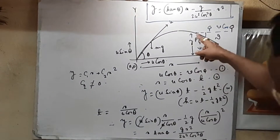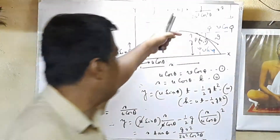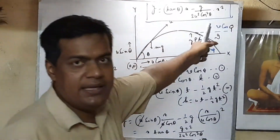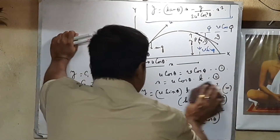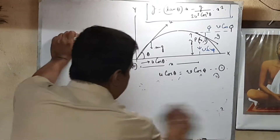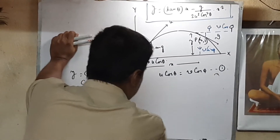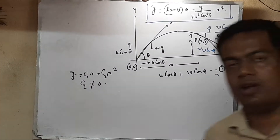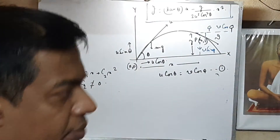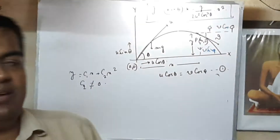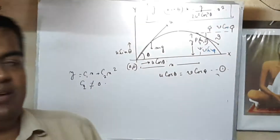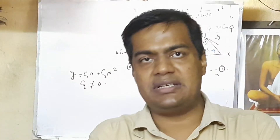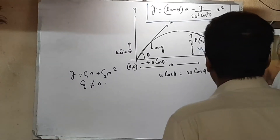The horizontal component of velocity of the projectile at every point of the trajectory does not change, because the projectile is only subjected to gravitational force which acts vertically downward. After time t, the vertical component of velocity changes according to the simple dynamical relation: if a body is projected with velocity u in the vertically upward direction against gravity, then after time t its velocity v is given by v = u − gt.